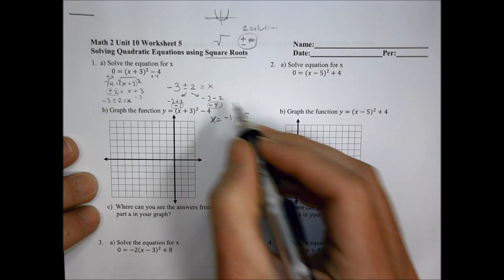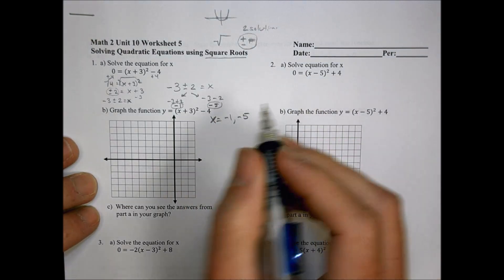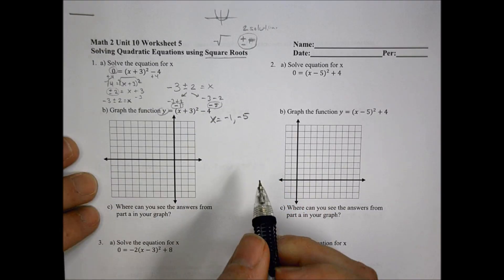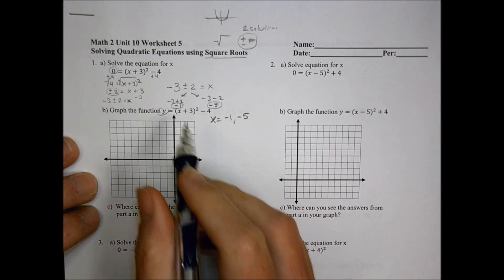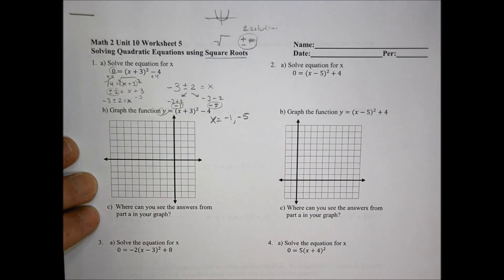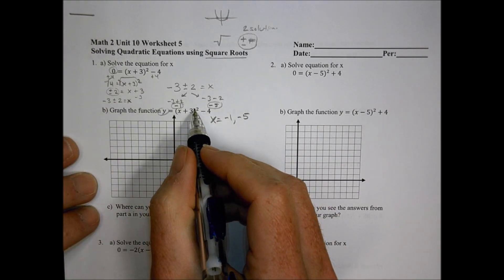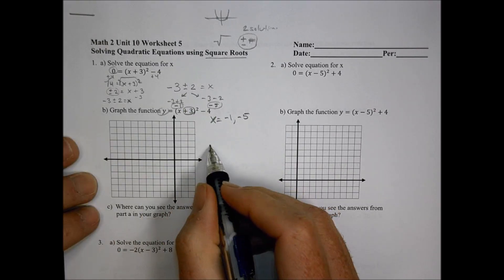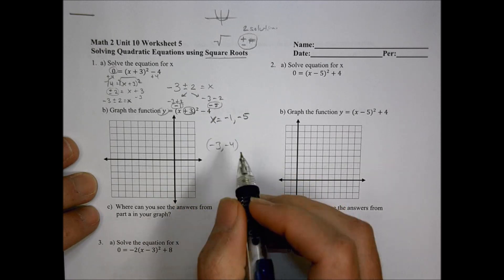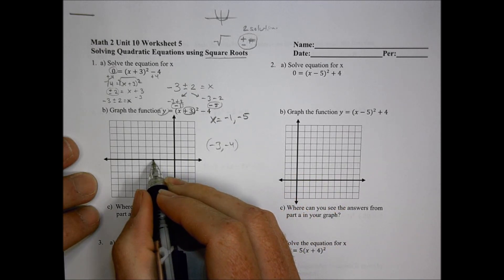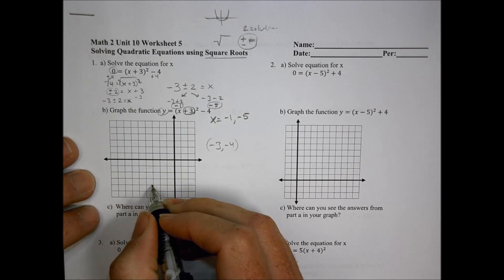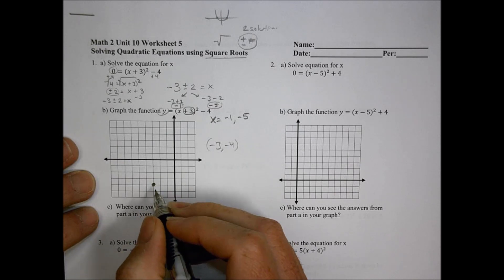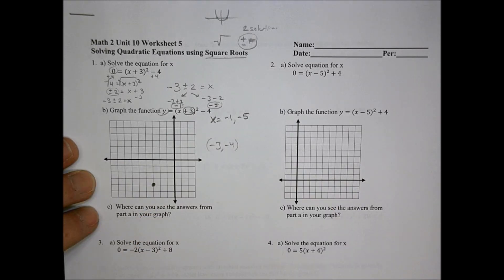Negative 1 and negative 5 are both values of x when the equation is set to zero — and zero is the same thing as y. So when I graph this function, the vertex is going to be at negative 3 comma negative 4. Let's plot that — go left 3, down 4. That's my vertex at negative 3 comma negative 4, which I know from the equation.